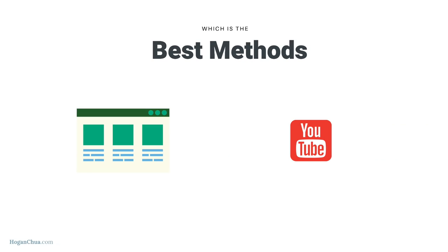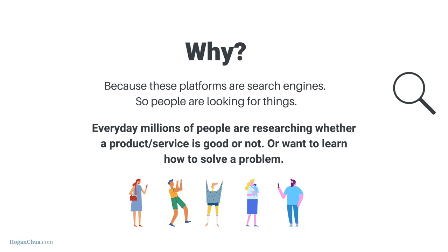The reason websites and YouTube channels are best is because these platforms are search engines. People are typing things into Google, researching different products and services, trying to figure out if a product is good or not. They also want to learn how to solve a problem — just like you found this tutorial by typing in 'how to make a website' or 'how to start affiliate marketing.' On these platforms, people are actively looking for things.